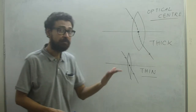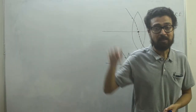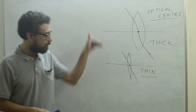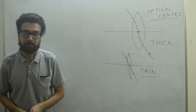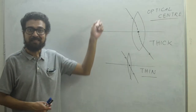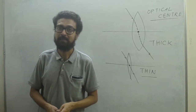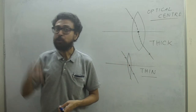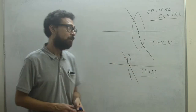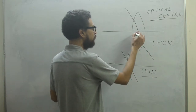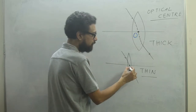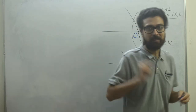For a thick lens, the optical center is where the trace of the ray intersects the principal axis. For a thin lens, when a ray goes through it, it doesn't actually deviate — it goes straight and intersects the principal axis at a particular point, which is called the optical center. So for thick lens it is the trace, and for thin lens it is the actual ray that intersects the principal axis. The universal identifier for optical center is O — just like the pole P for spherical mirrors.